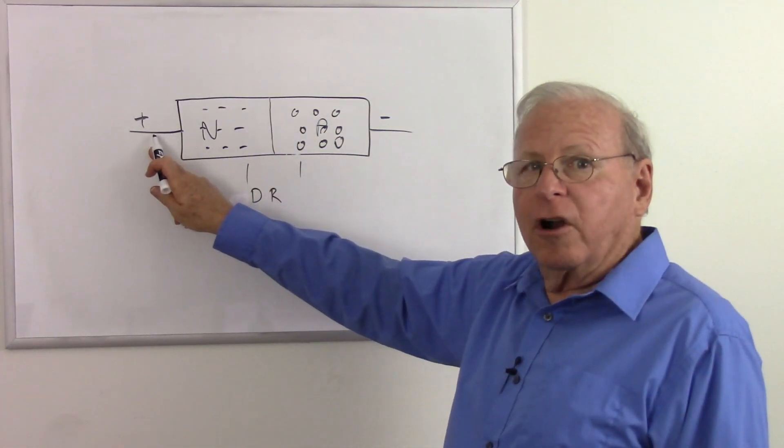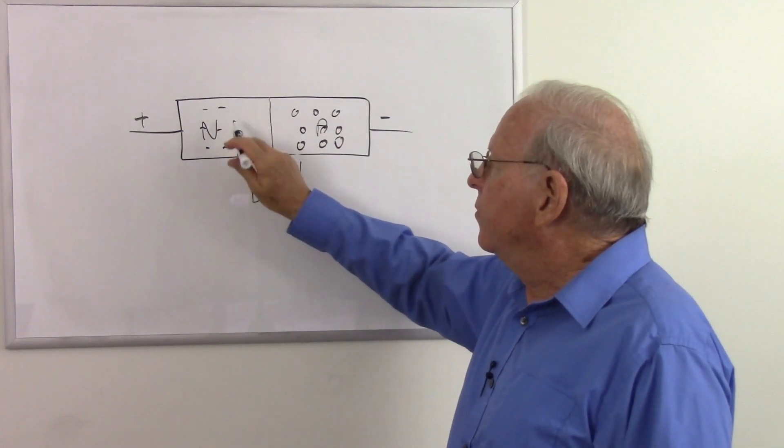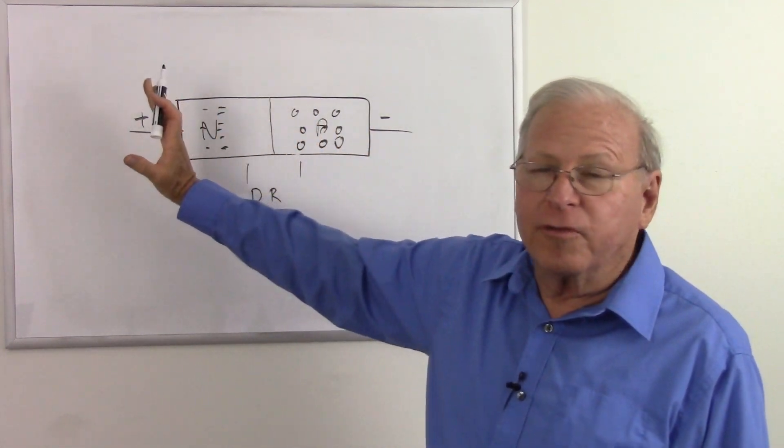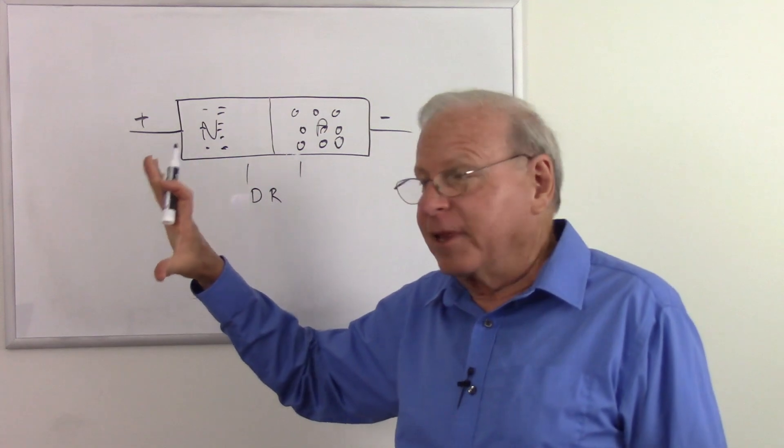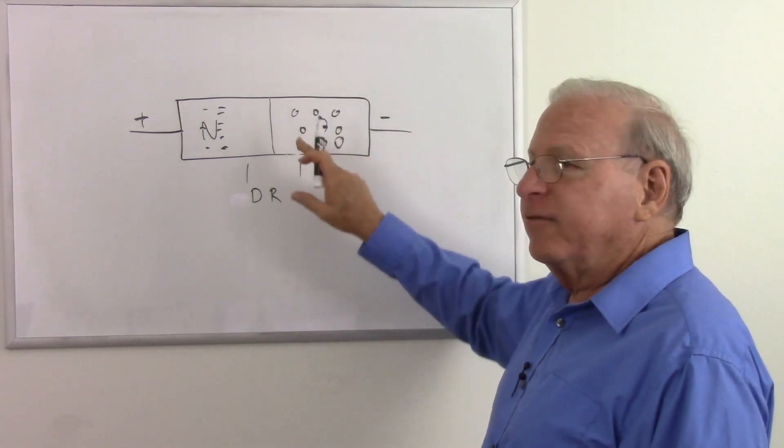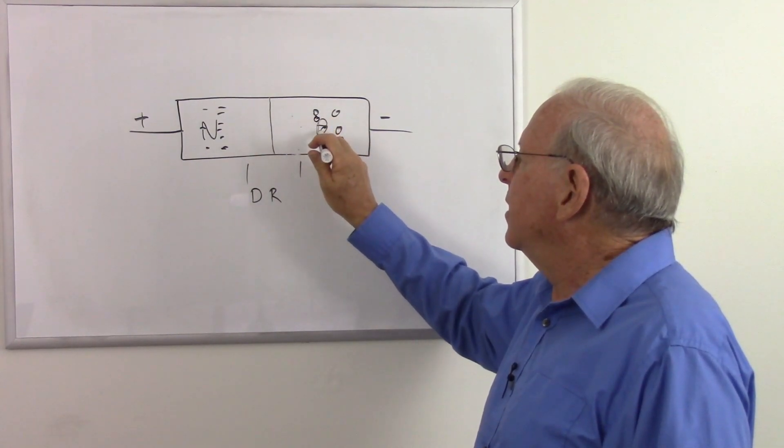So what's going to happen? Well, this positive charge is very attractive to these electrons, so these electrons are going to move away from the junction. It's going to suck them over there. It's almost like an electron vacuum. In fact, that'll come into play a little later. Over here we have a negative charge, and it's very attractive to these holes. So these holes will move away from the junction.